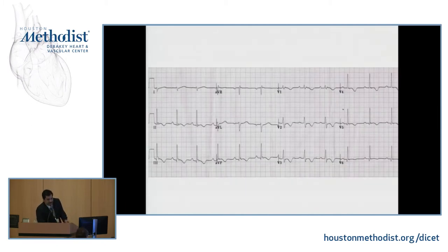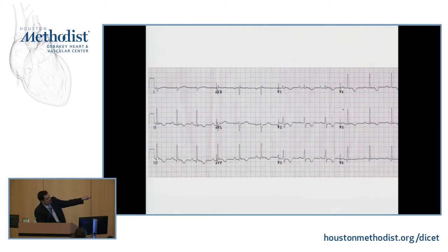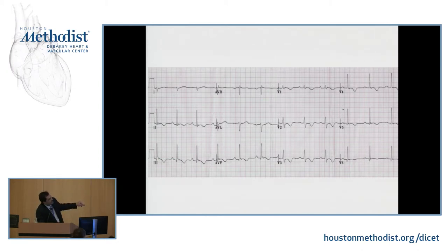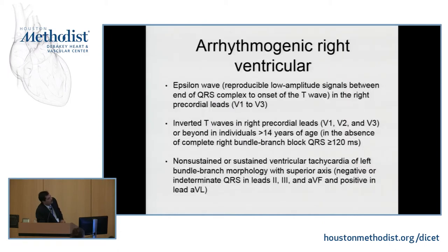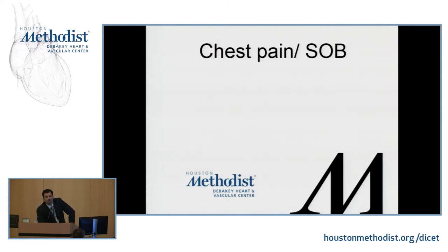Another classic in sudden cardiac arrest: this is the famous epsilon wave — this small notching you see right here. This EKG is from arrhythmogenic right ventricular dysplasia, where you can see this tiny fluctuation — the epsilon wave — along with deep T-wave inversions in V1, V2, V3, V4, which are additional criteria. If you also see non-sustained or sustained ventricular tachycardia with left bundle branch block morphology and a superior axis, that's usually suggestive of ARVD. We typically diagnose this with cardiac MRI.